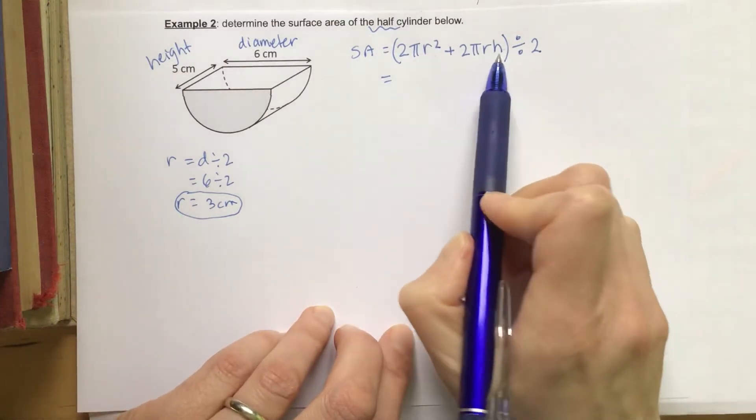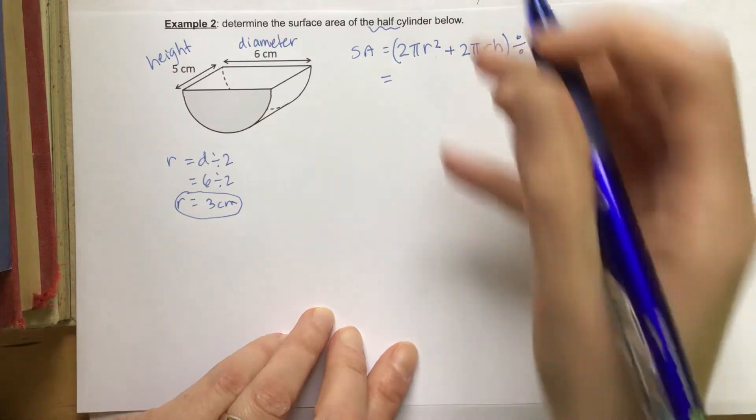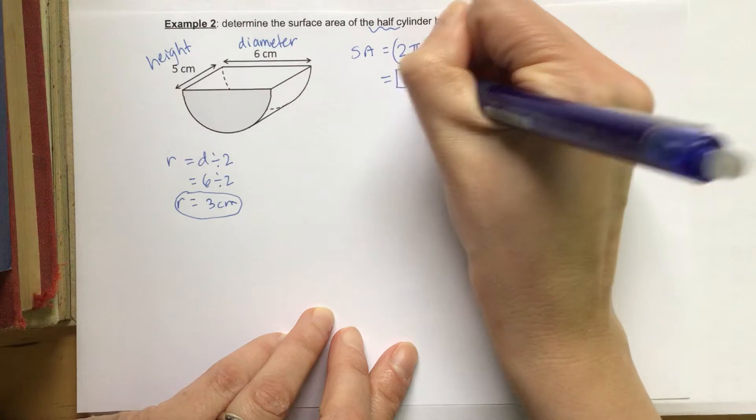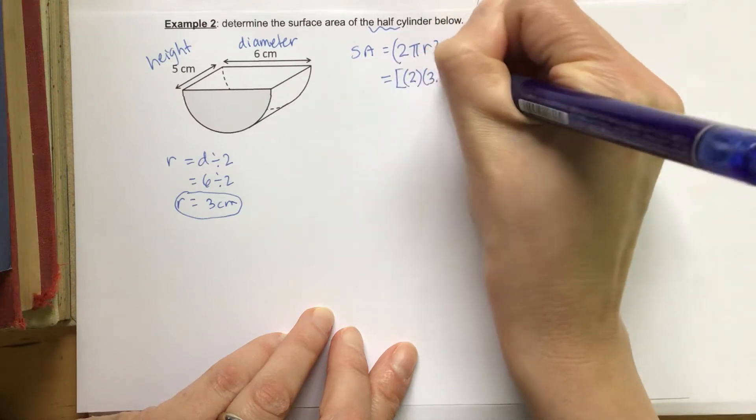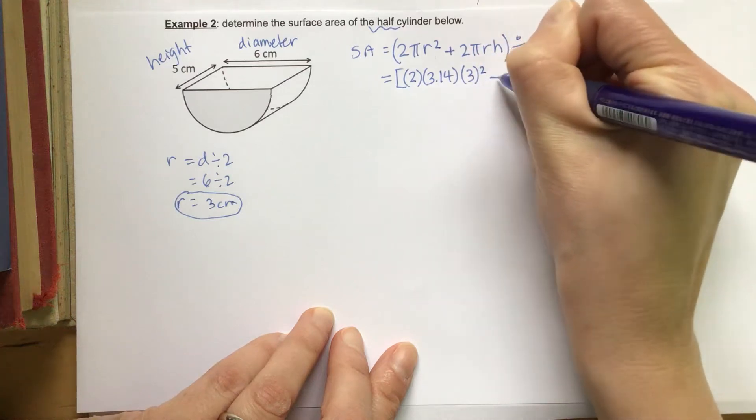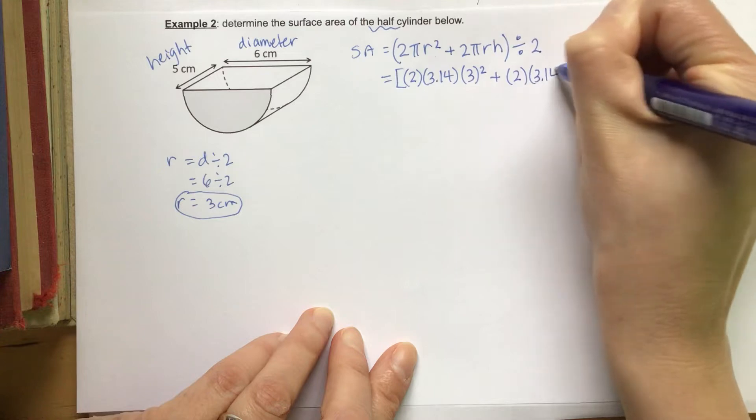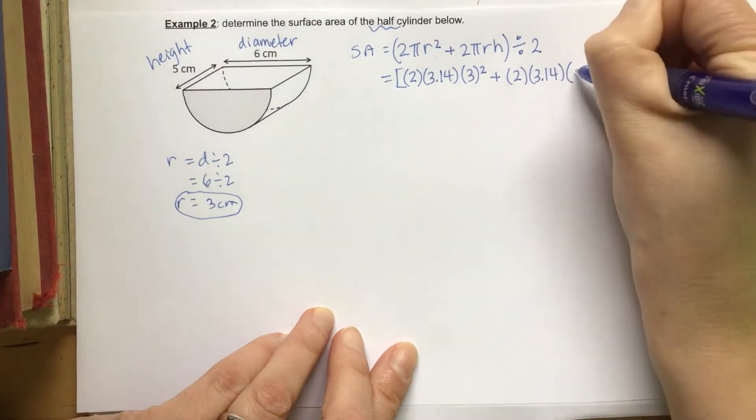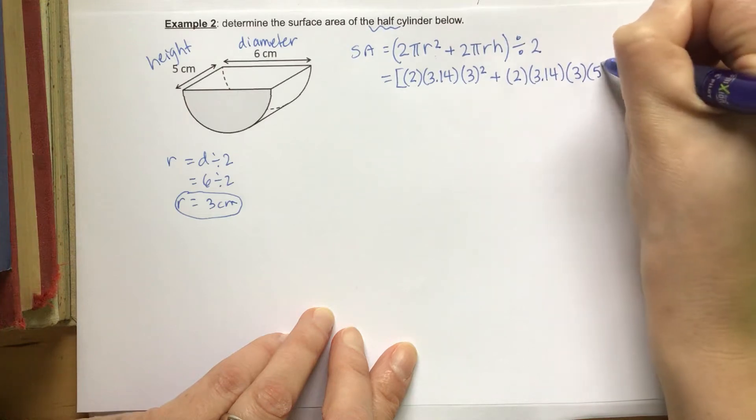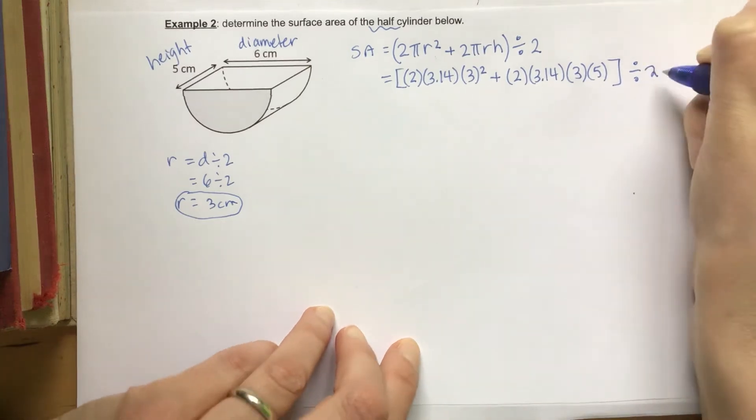And we have the radius and we have the height, so we're going to plug in all of that information. I'm going to use 3.14 for pi. So we have 2 times 3.14 times 3 squared plus 2 times 3.14 times 3 times 5. Okay, and all of that is divided by 2.